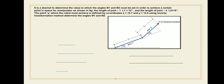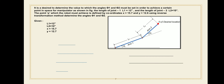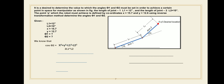First, write down the given data. L1 = 12 inches, L2 = 10 inches, x = 15.7, y = 12.7. These are the four given Cartesian space parameters. You have to find angle theta 1 — the angle made by the axis of link 1 and the horizontal — and theta 2 — the angle between the axis of link 1 and link 2. These are the two findings of the inverse kinematics problem. We know the formula for theta 2 from the previous lecture.